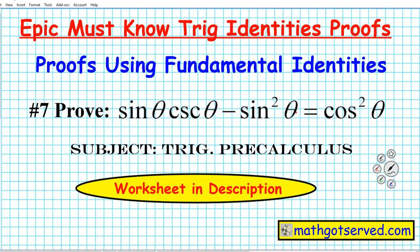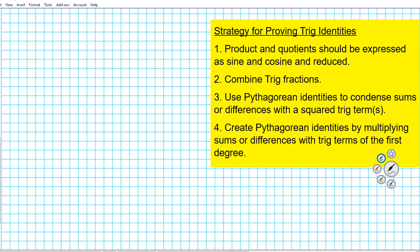Don't forget to take a look at the link in the description below to gain access to the worksheet that contains all the must-know trig identity proofs and a link to how each proof is done. For number seven the task is for us to prove that the identity sine theta cosecant theta minus sine squared theta is equal to cosine squared theta.